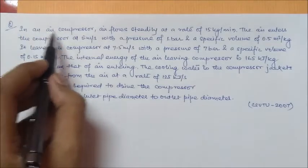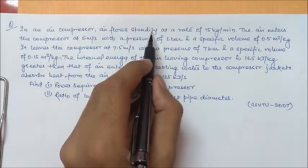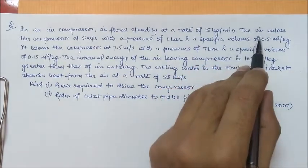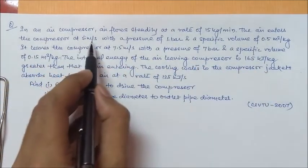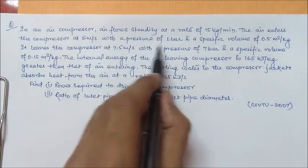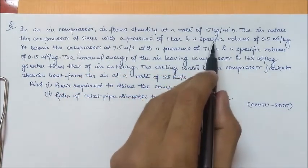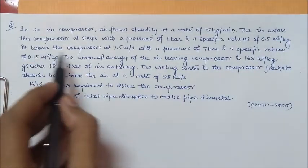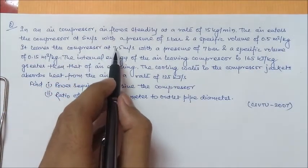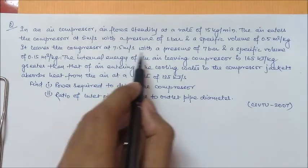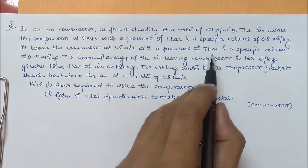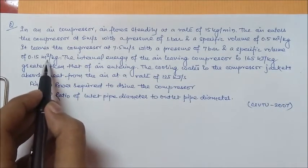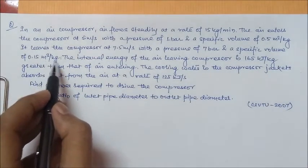In an air compressor, air flows steadily at a rate of 15 kg per minute. The air enters the compressor at 5 meter per second with a pressure of 1 bar and a specific volume of 0.5 meter cube per kg. It leaves the compressor at 7.5 meter per second with a pressure of 7 bar and a specific volume of 0.15 meter cube per kg.